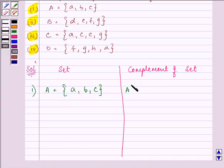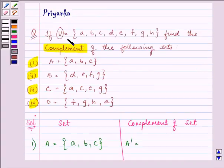So, its complement will be what? All the elements which are present in the universal set but are not a part of set A. So, except these three, we can write D, E, F, G, and H to be the elements of the complement of set A.